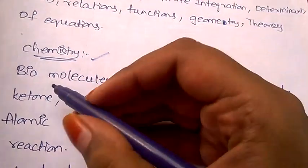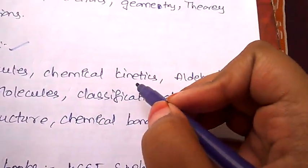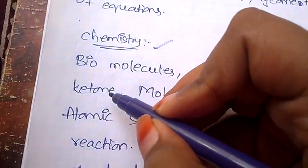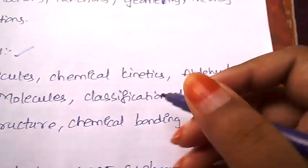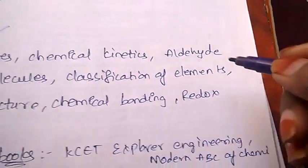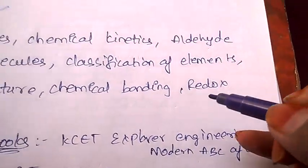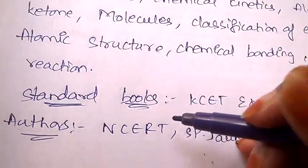Let's begin: biomolecules, chemical kinetics, aldehyde, ketone, molecules, classification of elements, atomic structure, chemical bonding, and redox reaction.